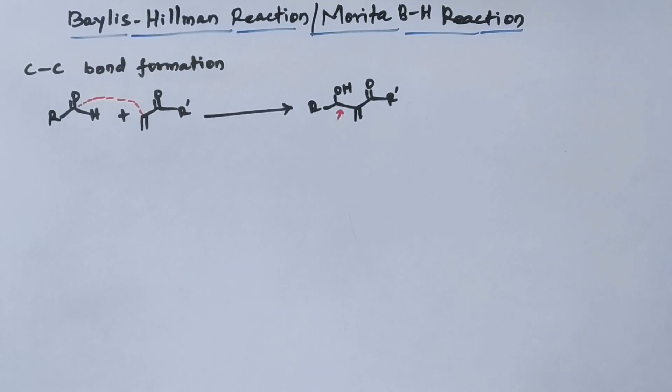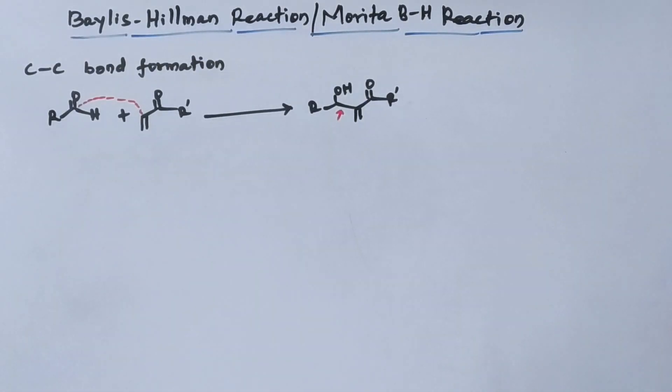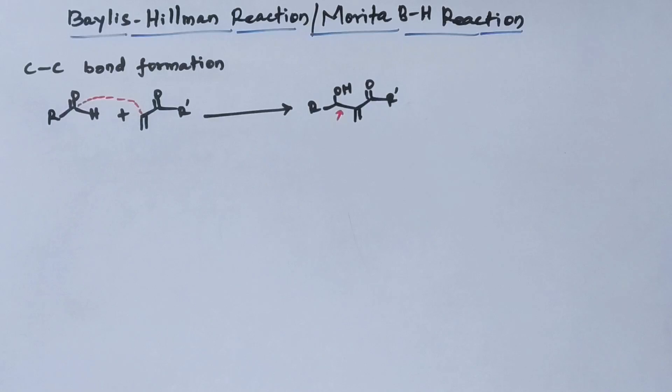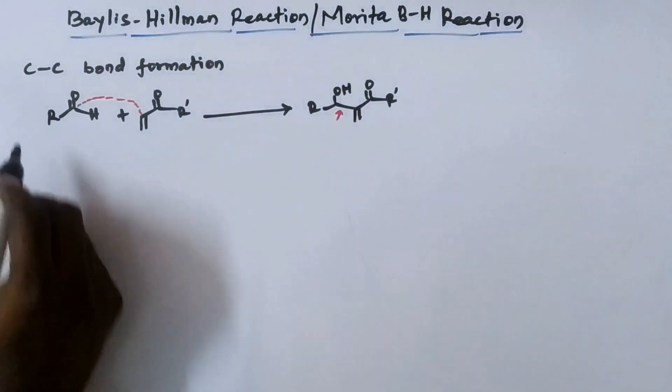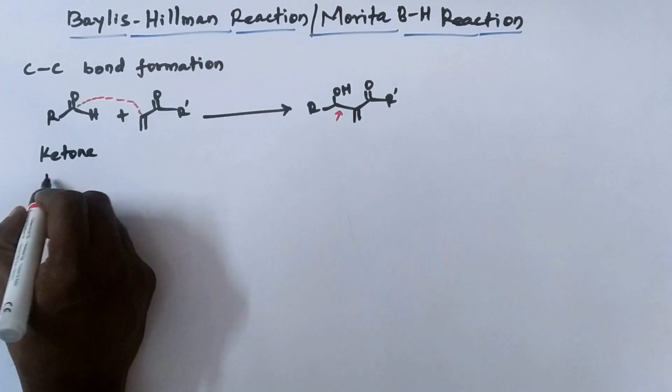Baylis-Hillman product, the Baylis-Hillman adduct is also similar to aldol but it bears a methylene group at the alpha carbon. In the place of aldehyde, we can use ketone, we can use imine.